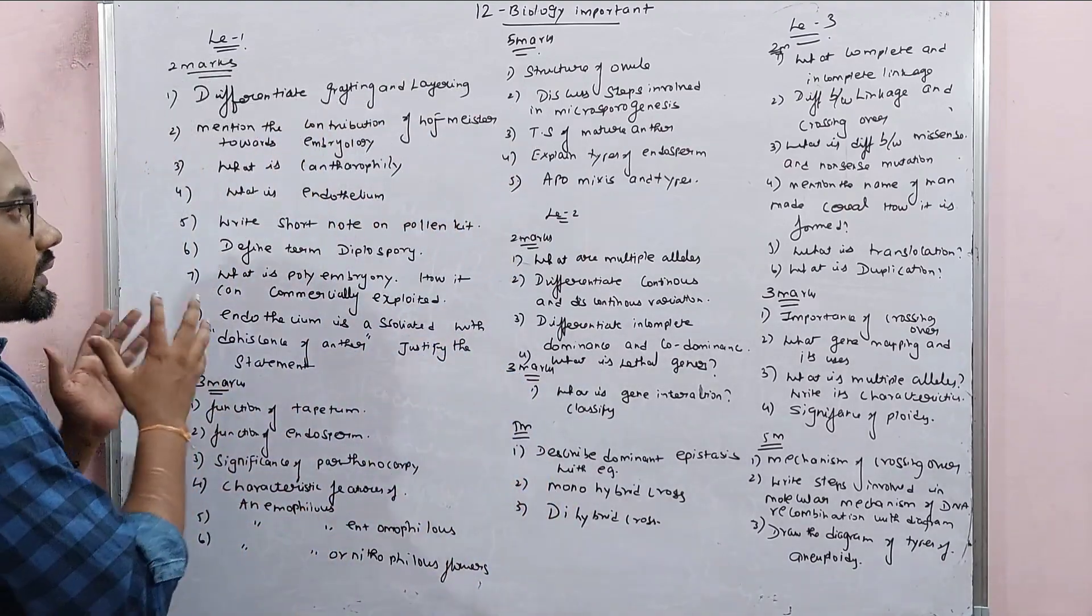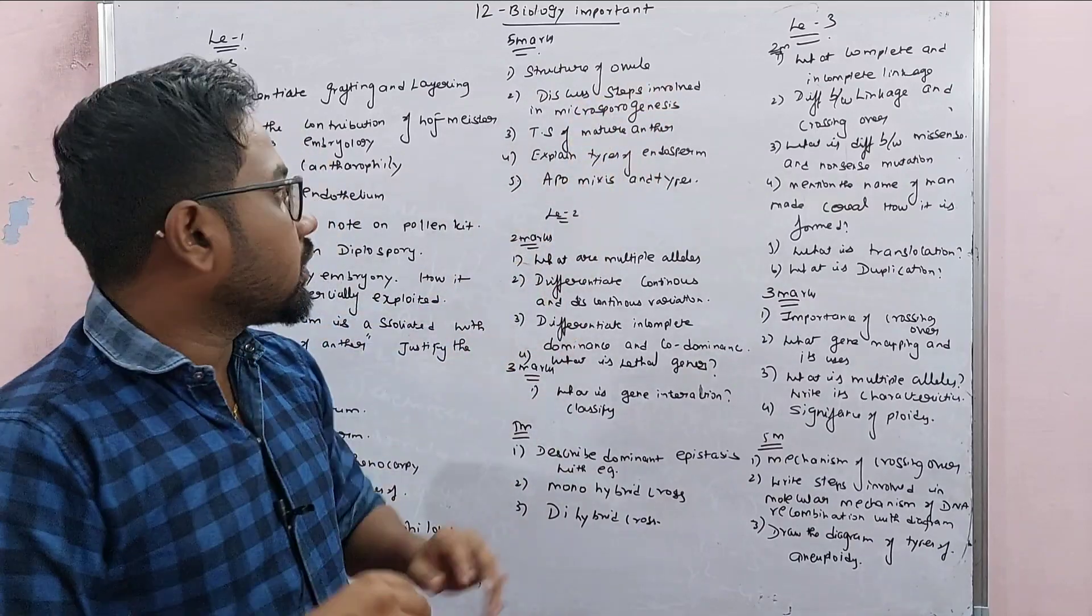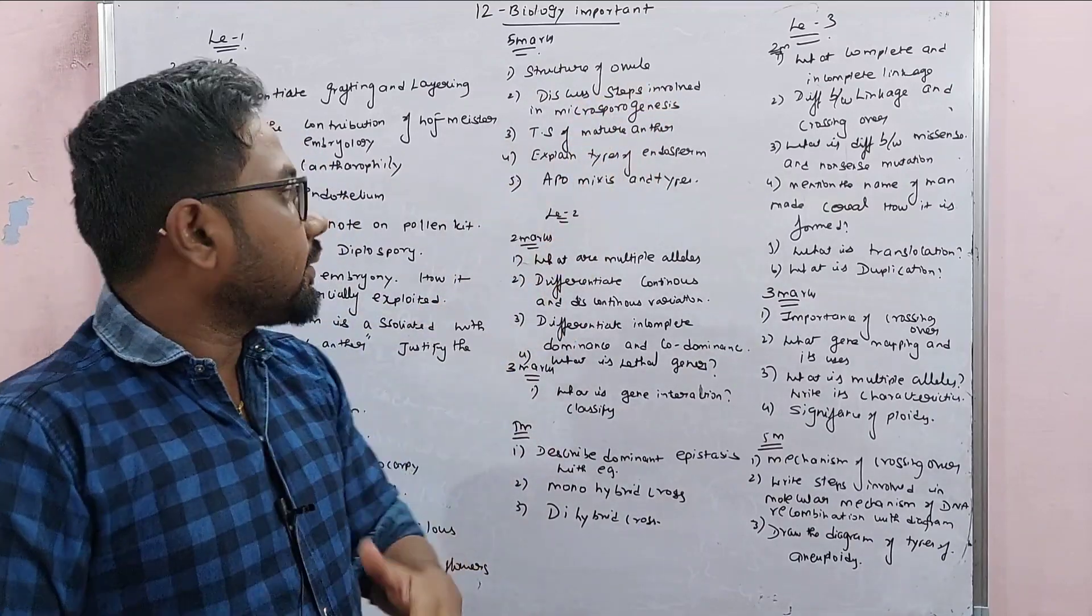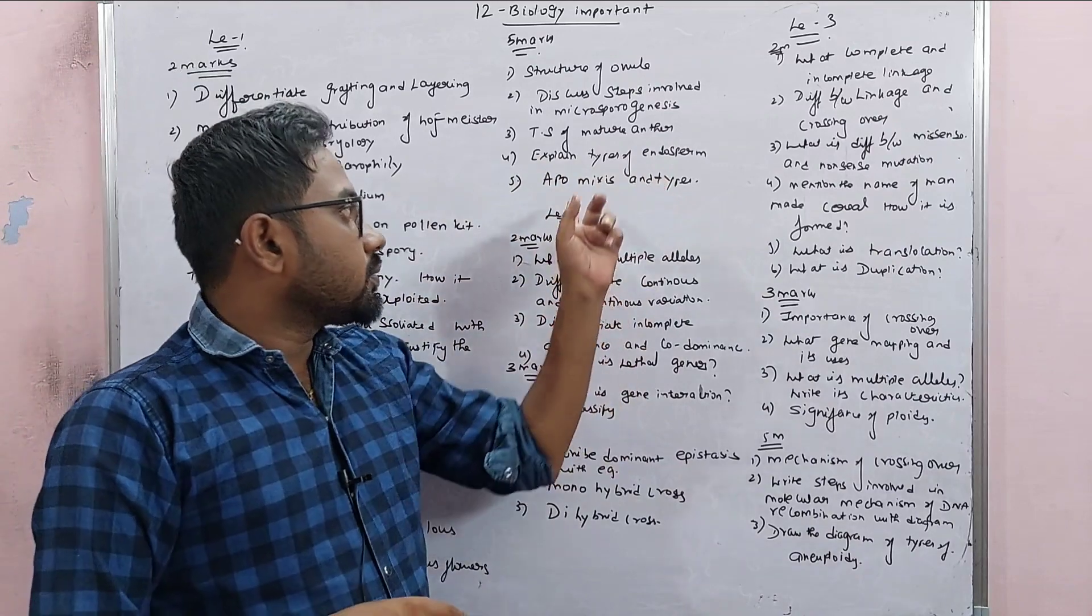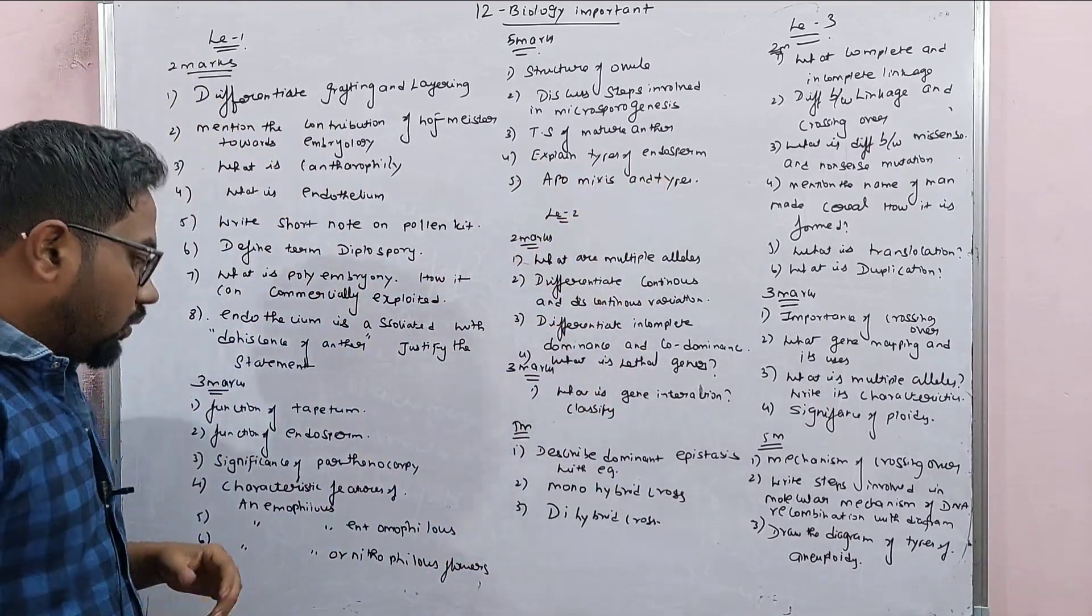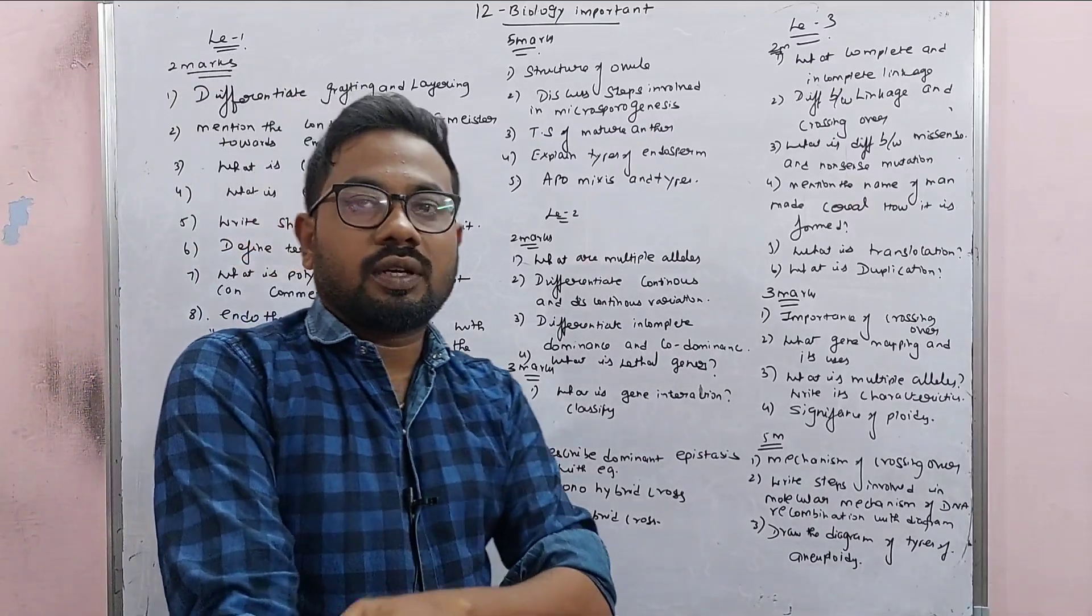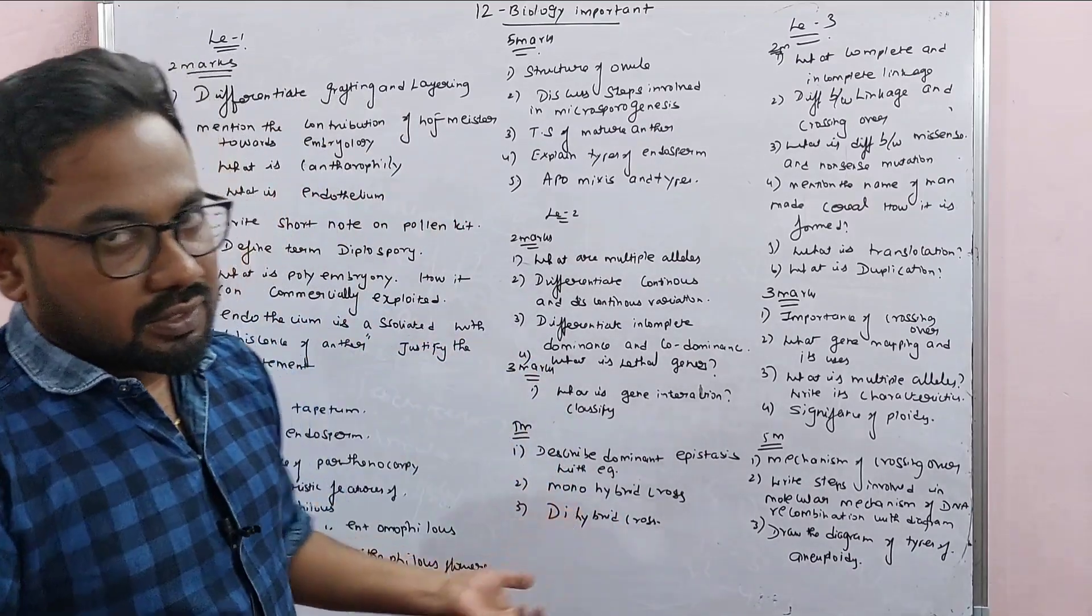Let's take a look at 5 Marker. Structure of Ovule, Steps in Embryo Sac and Microsporangium. T.S. of Mature Anther. Explain the types of Endothelium and Apomixis types. Parthenogenesis, I have already told you. That's the 5 Mark: what is Parthenogenesis and what is the significance of Parthenogenesis.